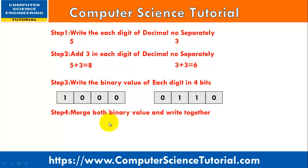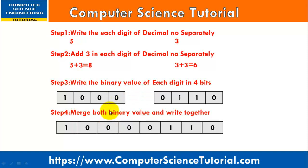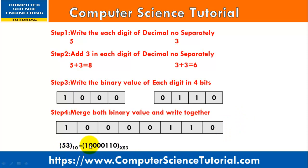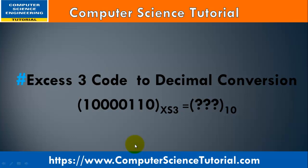Step 4: merge both binary values and write them together. After merging the groups, our number is 1000 0110. This is our answer. So when we convert 53 base 10, it returns 10000110 in XS3 code.